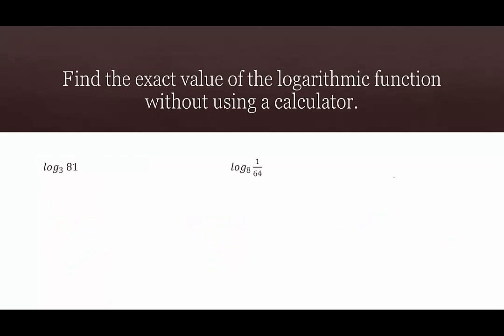Now we're going to look at other bases aside from base 10 and find exact values without a calculator. Applying the power to a power property, our goal is to take the argument and write it as a power of the base. For log base 3 of 81, we ask: what power of 3 is 81? It's 3 to the fourth. So we rewrite 81 as 3 to the fourth, use power to a power to get 4 times log base 3 of 3, and log base 3 of 3 is 1, so 4 times 1 is 4.